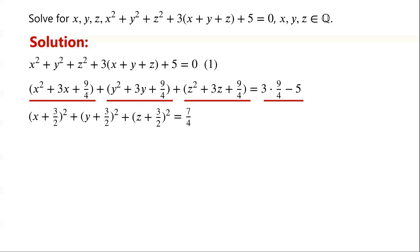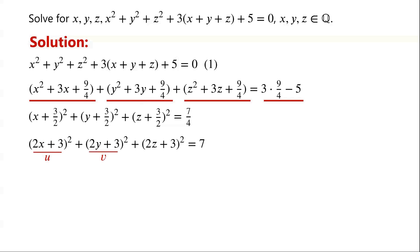Now multiply the equation by 4. We have: (2x plus 3) all squared plus (2y plus 3) all squared plus (2z plus 3) all squared equals 7. We let 2x plus 3 equal u, 2y plus 3 equal v, 2z plus 3 equal w. Then the equation can be written as u squared plus v squared plus w squared equals 7.